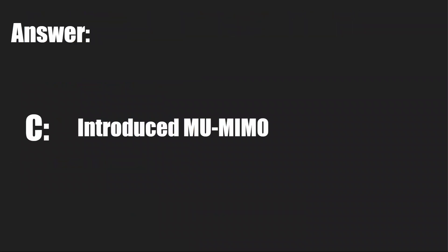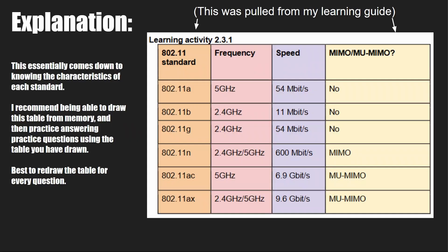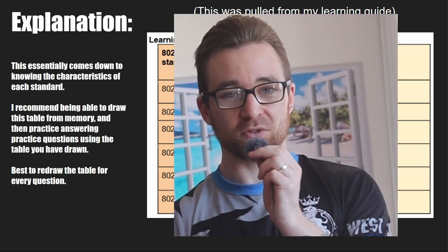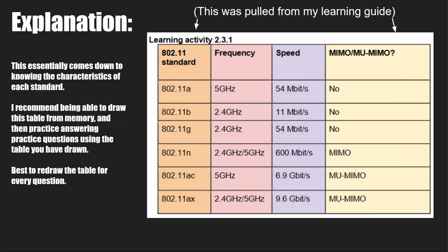And the answer is C — it introduced MU-MIMO, which stands for multiple user, multiple input, multiple output. For this, you need to make sure you know the difference between each of the standards — the frequencies they operate on, the speeds they operate at, and whether they do MIMO or MU-MIMO. If you don't know what those are, go away and research it. Professor Messer does great stuff on it, and my learning guide at journeytocyber.com also goes into great detail on it. So that being said, we're going to go ahead and move on to the next question.